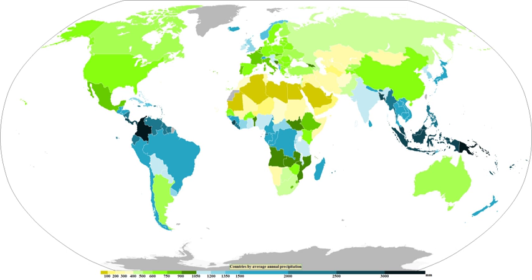The likelihood or probability of an event with a specified intensity and duration is called the return period or frequency. The intensity of a storm can be predicted for any return period and storm duration from charts based on historic data. A 1-in-10-year storm describes a rainfall event that is rare and only likely to occur once every 10 years, so it has a 10% likelihood in any given year. A 1-in-100-year storm is extremely rare, with a 1% likelihood in any given year. It is possible, though unlikely, to have two 1-in-100-year storms in a single year.